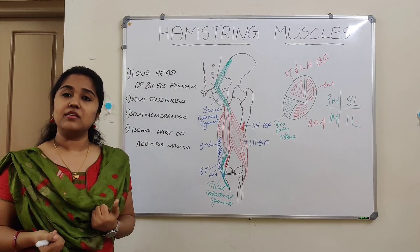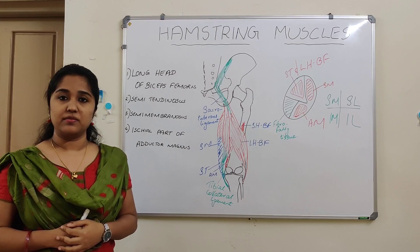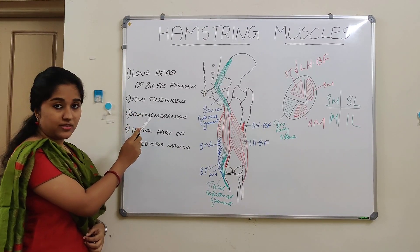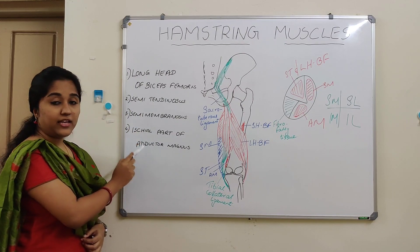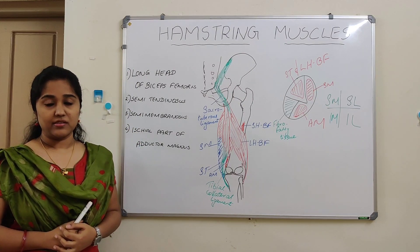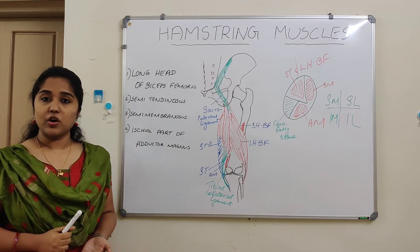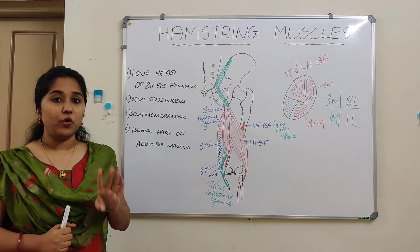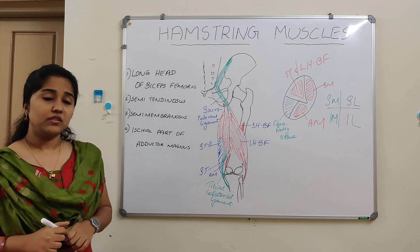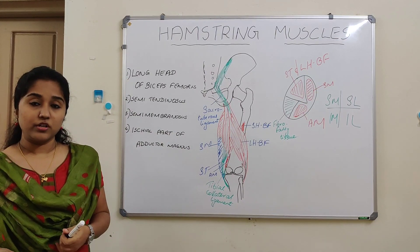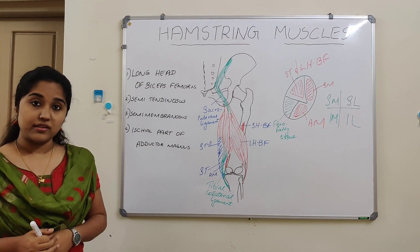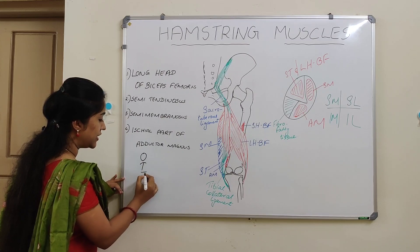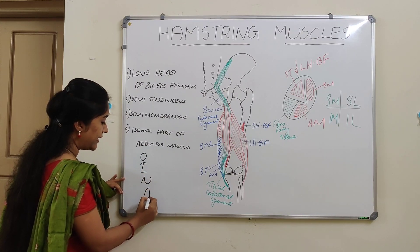Which muscles constitute the hamstring muscles? These muscles are: long head of biceps femoris, semitendinosus, semimembranosus, and the ischial part of adductor magnus. In order to call a muscle a hamstring, it has to fulfill four criteria: origin, insertion, nerve supply, and action.